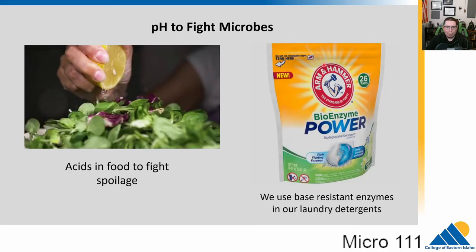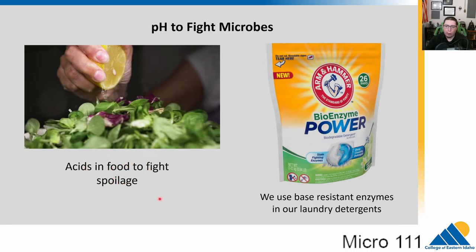How do we use this knowledge? Food preservation is critical, and we use pH to fight microbes in food. Most microbes that spoil food don't like low or high pH. Putting citrus or lemon in things lowers the pH and fights spoilage microbes. Laundry detergents with enzymes that remove stains use base-resistant enzymes that come from alkalophiles, so they can resist the basic detergent and still work. These organisms actually impact our daily lives.